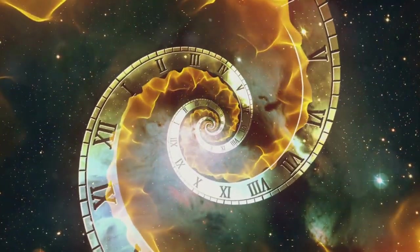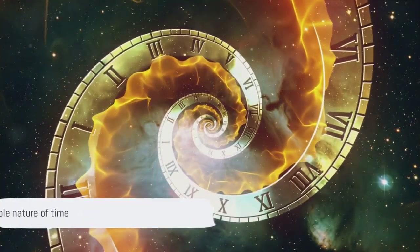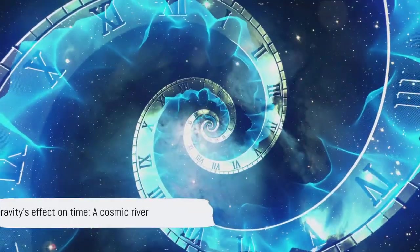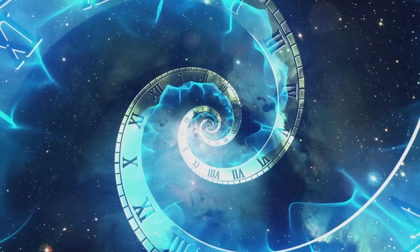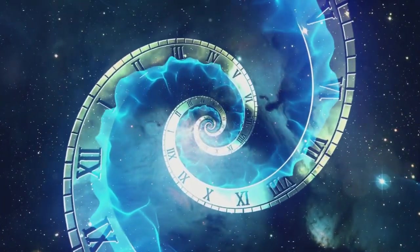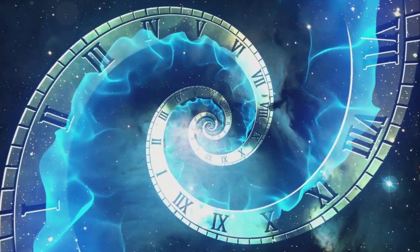You see, time isn't as rigid as we perceive it. It's more like a cosmic river, flowing more slowly in some places and faster in others. Think about it this way: time actually runs slower at sea level compared to a mountain top. Why? Because of gravity.